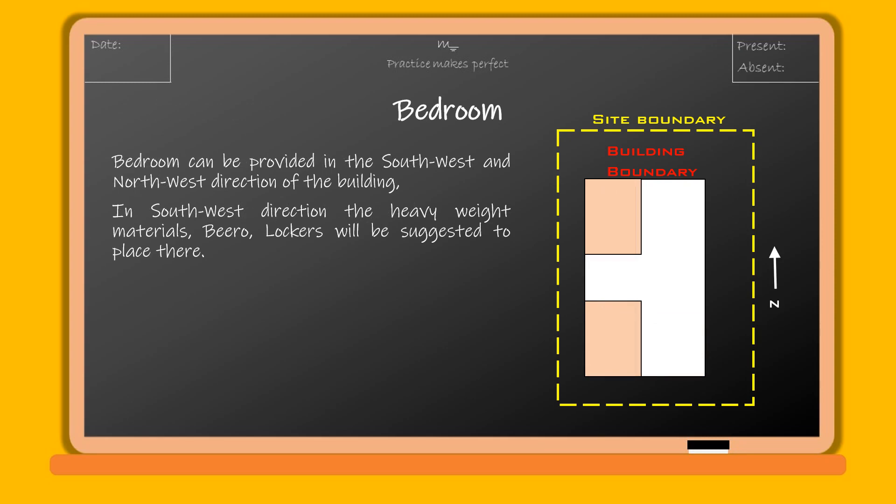The bedroom can be provided in the southwest and northwest direction of the building. In the southwest direction, heavyweight materials such as bureaus and lockers are suggested to be placed.